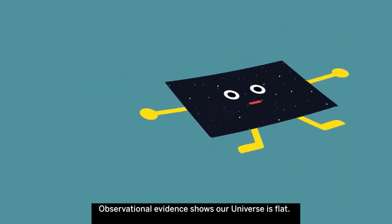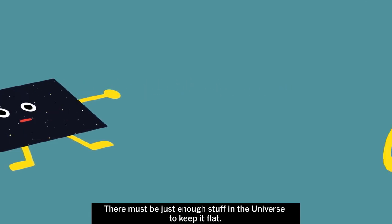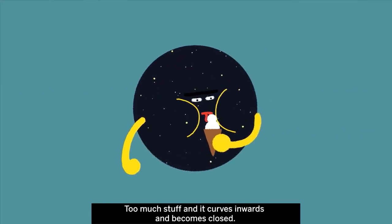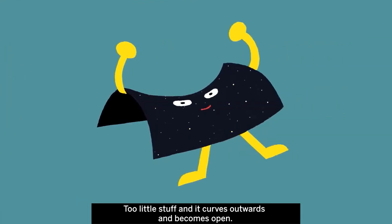Observational evidence shows our universe is flat. There must be just enough stuff in the universe to keep it flat. Too much stuff, and it curves inwards and becomes closed. Too little stuff, and it curves outwards and becomes open.